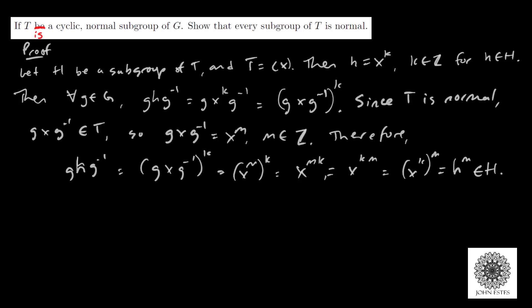Thus, GHG^(-1) is in H for any H in H and for any G in G. Therefore, H is normal, which is exactly what we're trying to show.